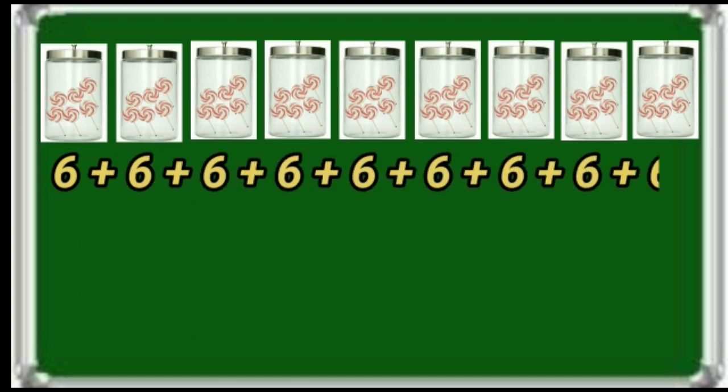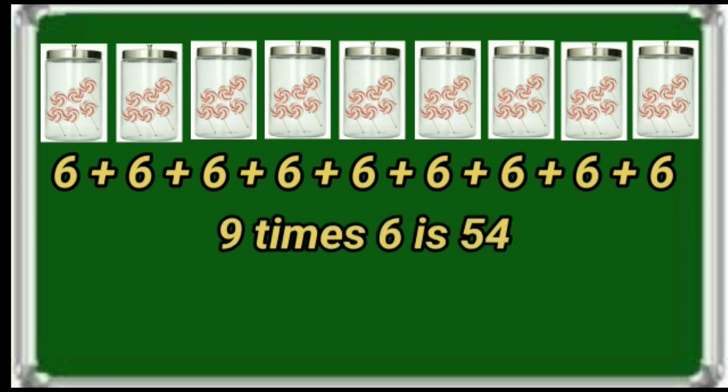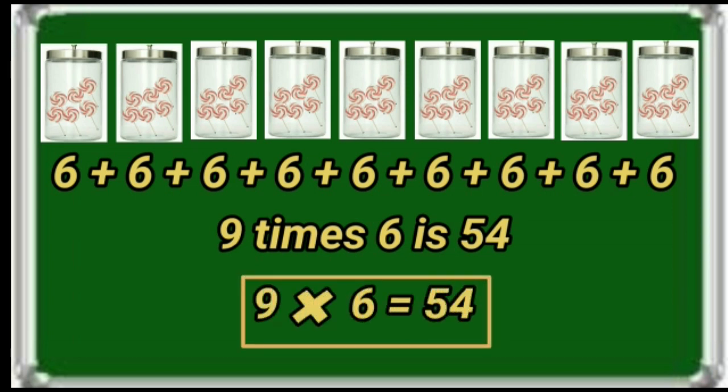Next, he arranged 6 lollies in each jar. Total 54 lollies. Here 6 is repeating 9 times. 9 times 6 is 54. That can be written as 9 6's = 54.